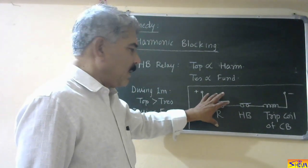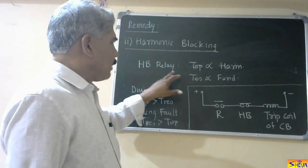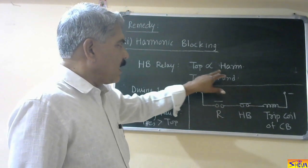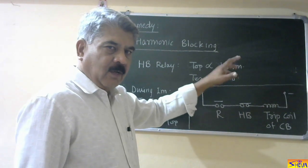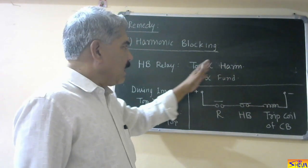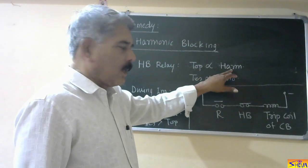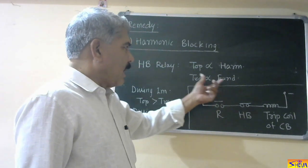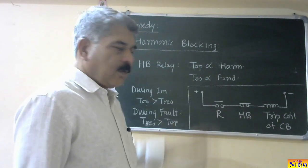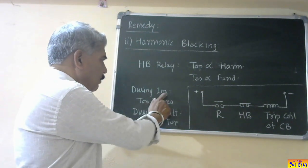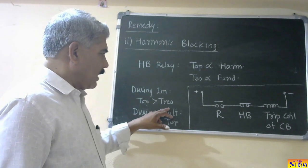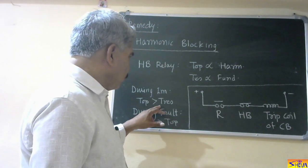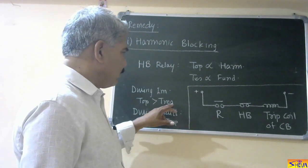The harmonic blocking relay has filters. Its operating torque is energized by the harmonic component via a filter, and its restraining torque is energized by the fundamental component via a separate filter. During flow of magnetizing inrush current, harmonics are high so operating torque is greater than restraining torque, and this relay operates — meaning its normally closed contact opens.